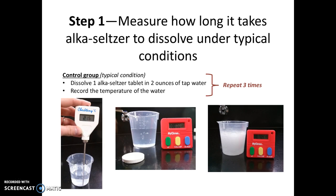Some people might want to test the temperature of the water as a potential variable. Because this is a potential experimental variable, I suggest that you record the temperature of your control group. To record temperature we're going to be using digital thermometers, which you can see in this picture. The digital thermometer records temperature in degrees Celsius. There's a switch on the top to turn it on and off, and you can stick that probe in your water to figure out the initial temperature when you get it out of the tap.